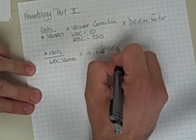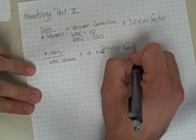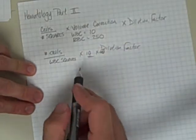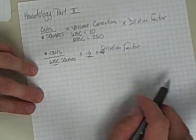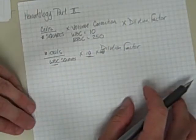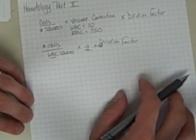And this keeps it an even 10 every single time. So as long as you're talking white blood cell squares, you can just remember the 10 and you don't need to worry about the red cell square thing.